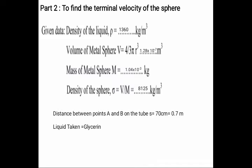Density = mass/volume = 8125 kg/m³, and the distance between two points A and B is 0.7 meter. Liquid taken is glycerin.